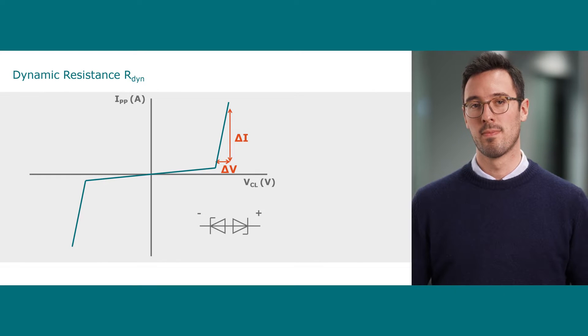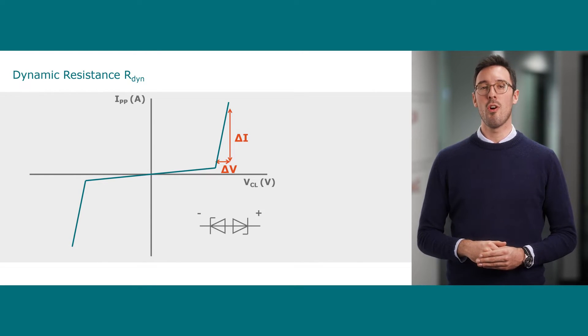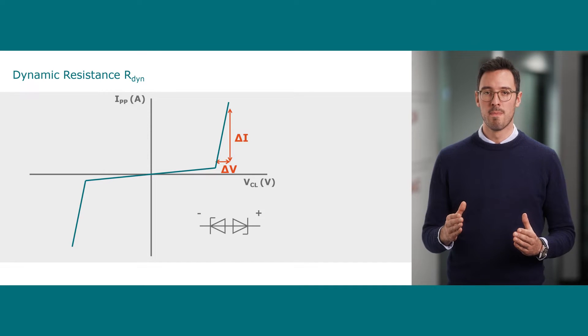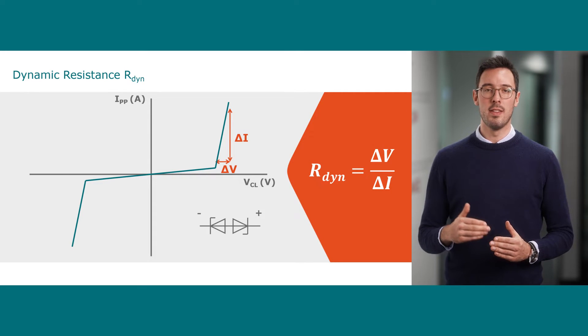How is the dynamic resistance defined? The dynamic resistance is a very important parameter, giving a strong indication about the electrical behavior of the ESD protection device. When we plot the graph with voltage on the x-axis and current on the y-axis using TLP testing, we get something like this. For each measurement point, we can calculate the slope of delta current and delta voltage, and this slope is our dynamic resistance, which is stated in the datasheet.